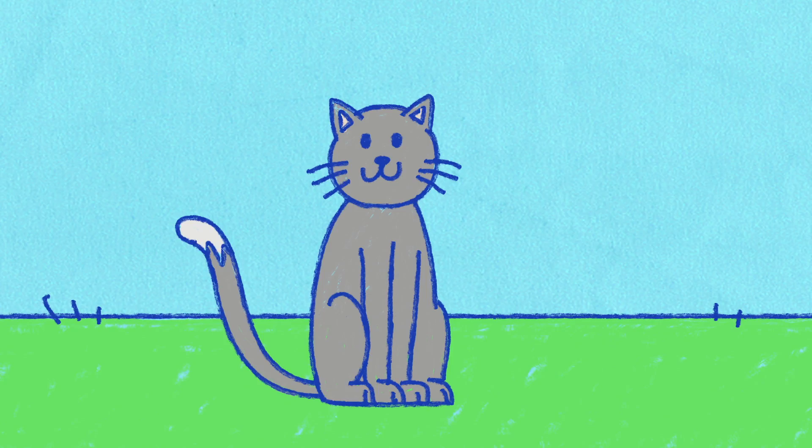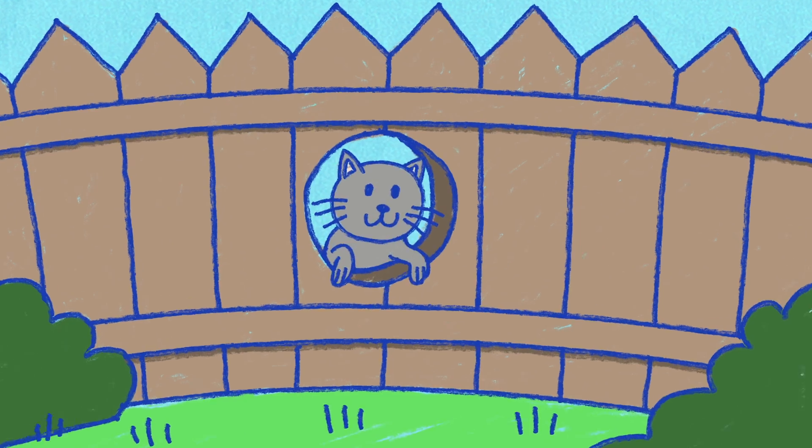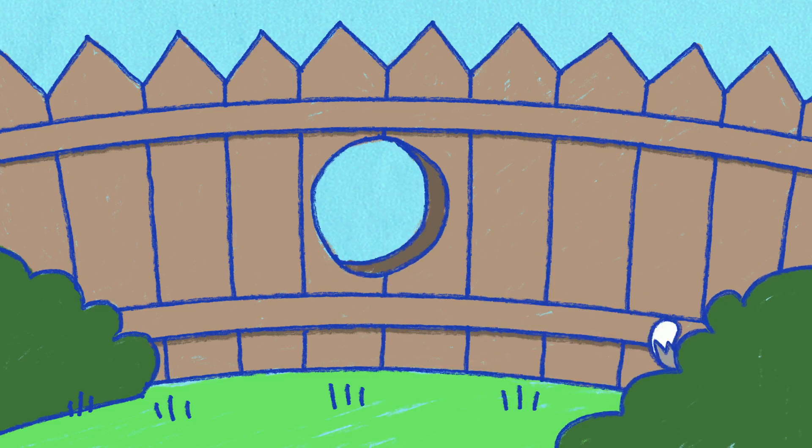Cats' whiskers are so sensitive they can sense the tiniest change in the breeze. And they tell them where they can sneak. If a cat's whiskers fit through a gap, then the rest of the cat will too.